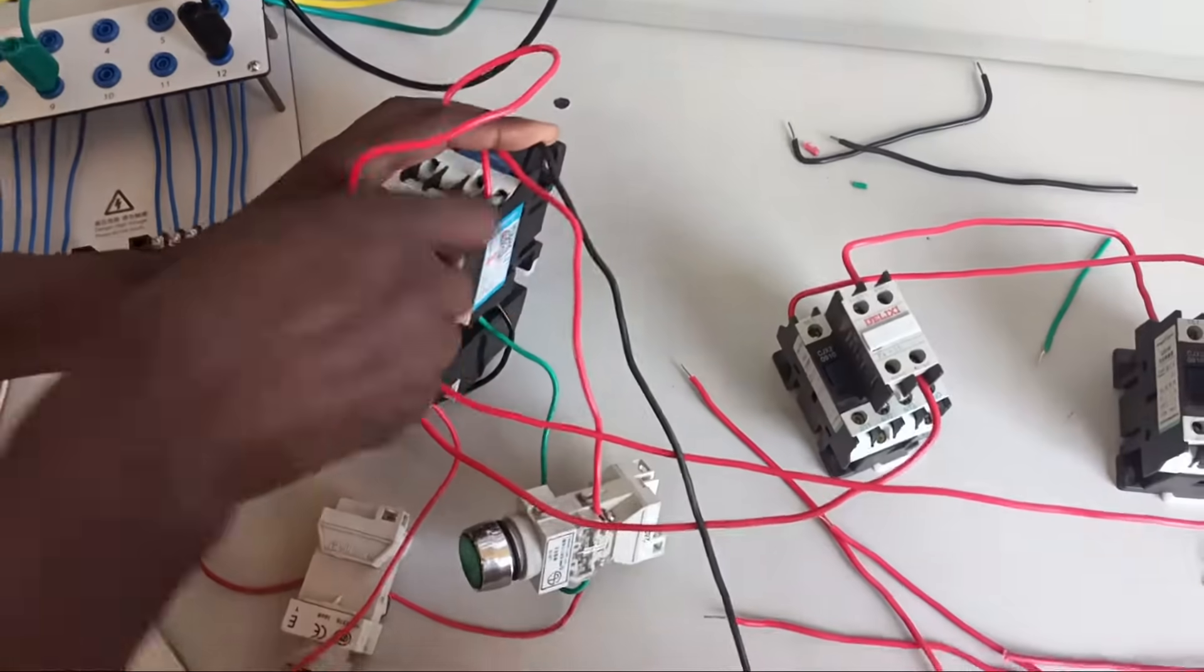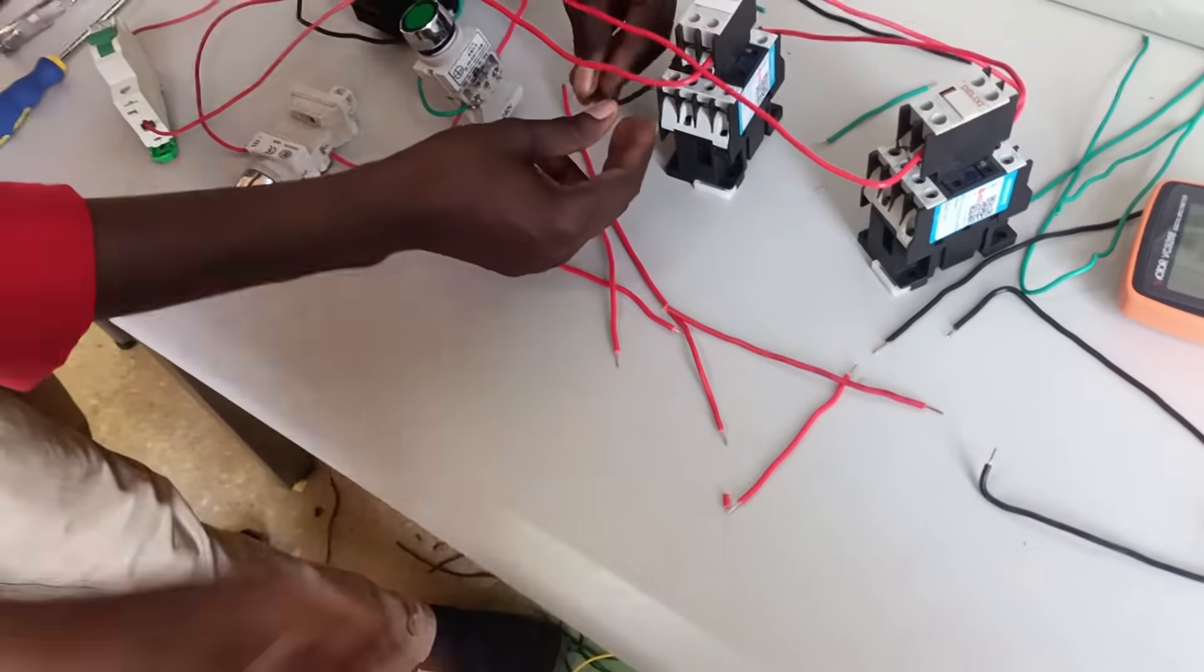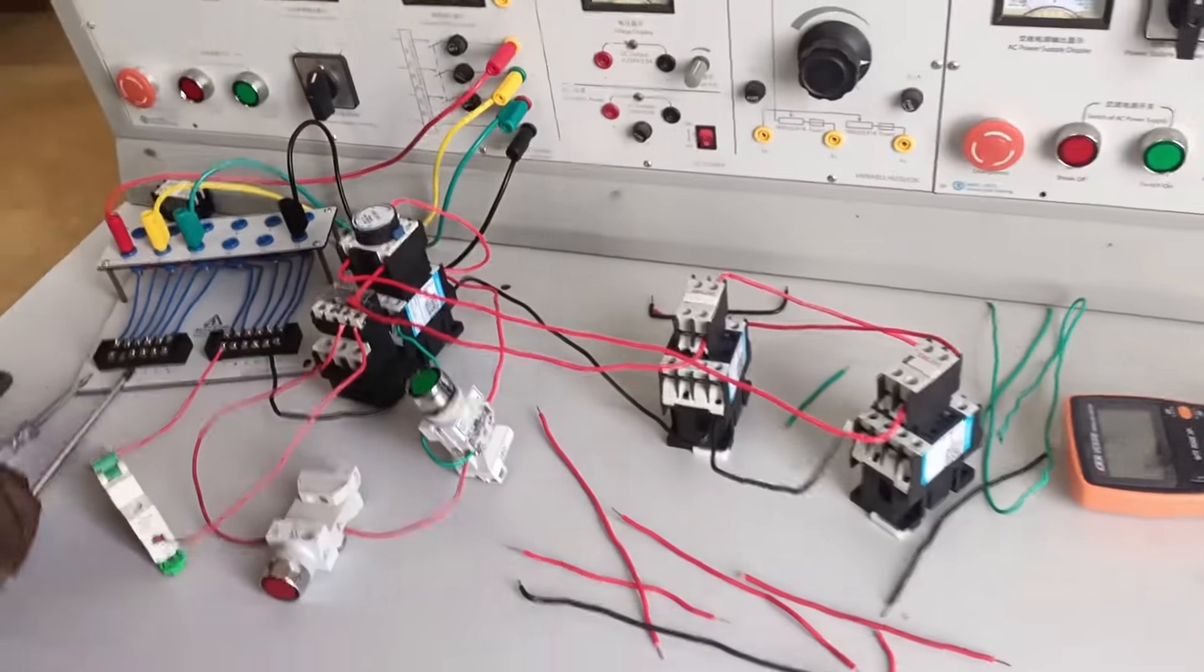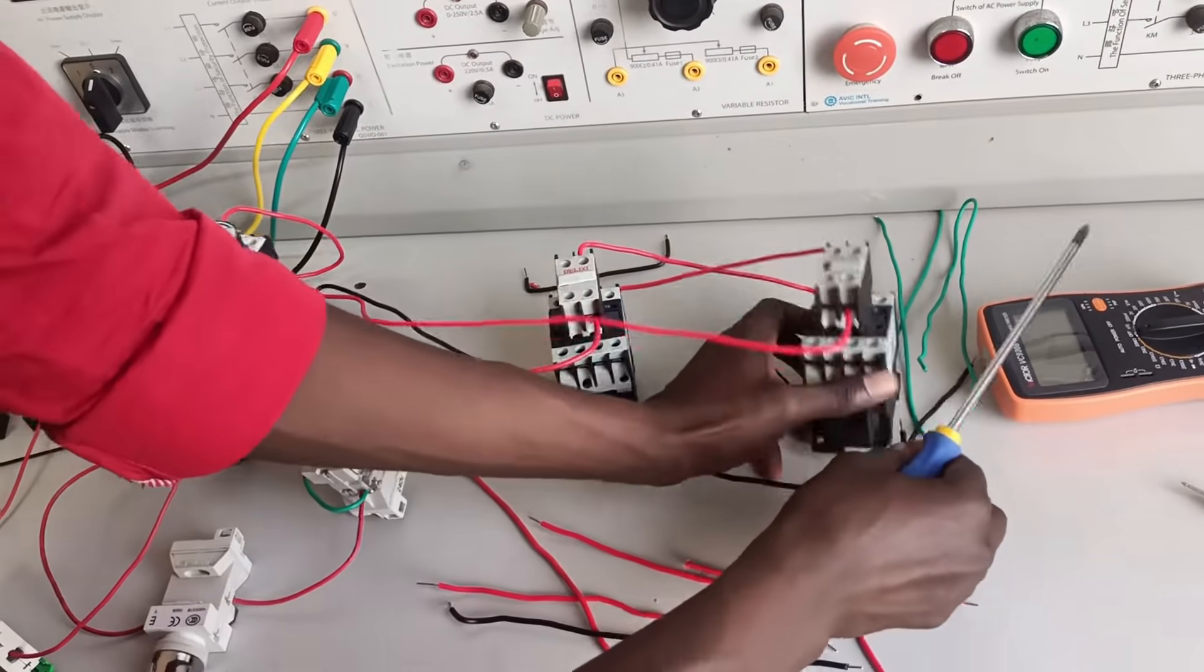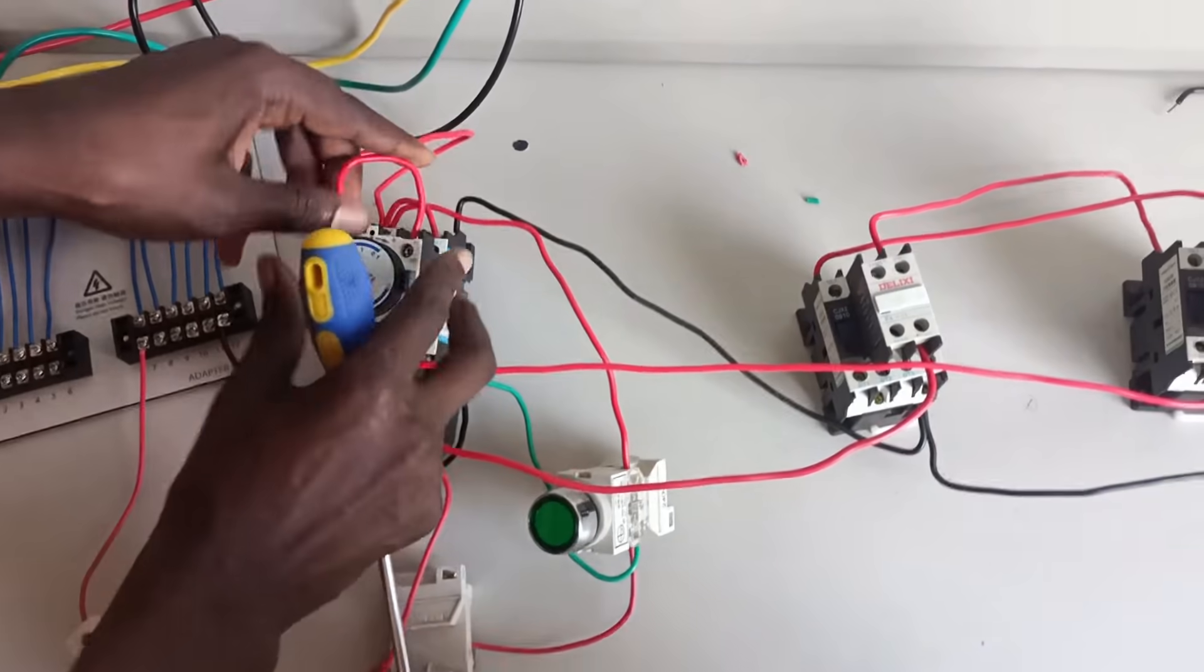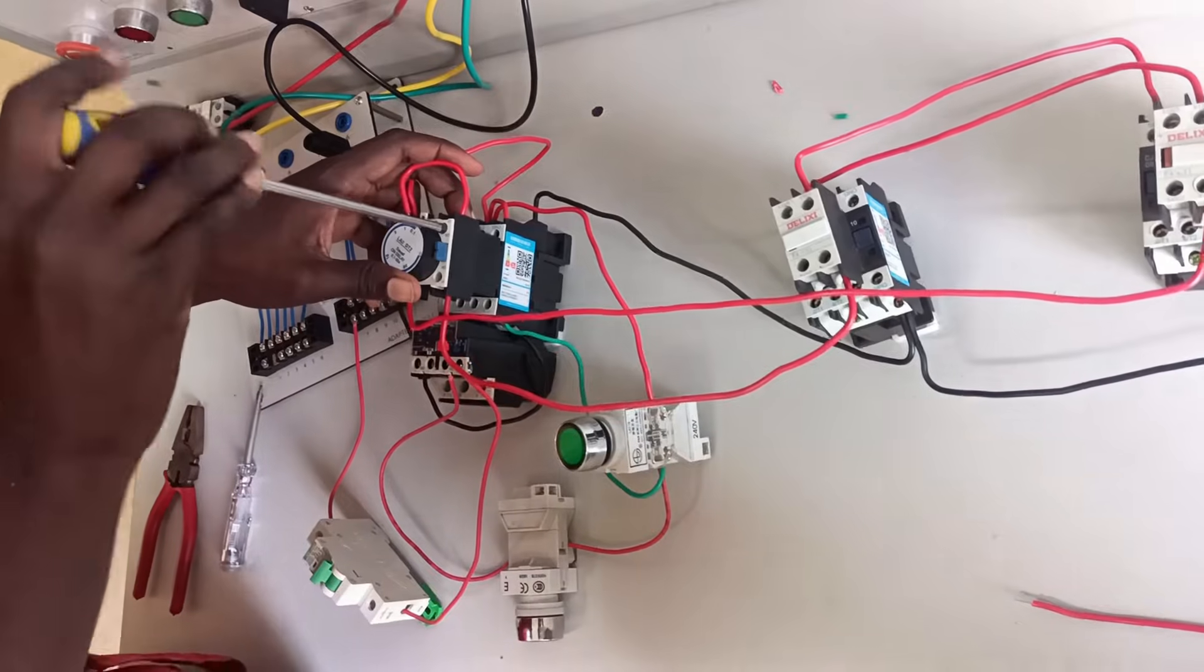It helps to make sure that at no given point will these two contactors be on. Remember the main contactor works adjacent with each contactor. For the star connection the main contactor will work with the delta contactor in that manner.